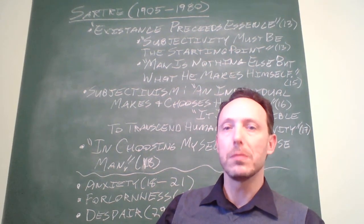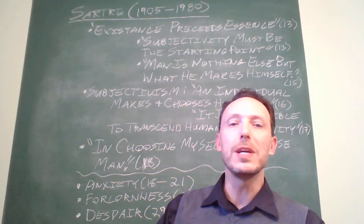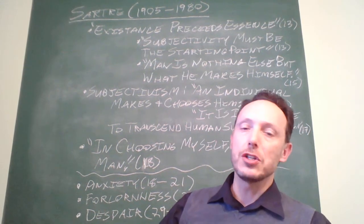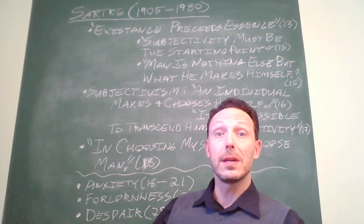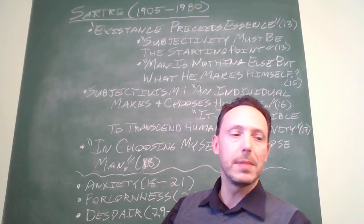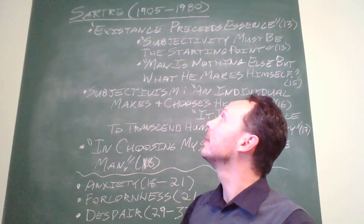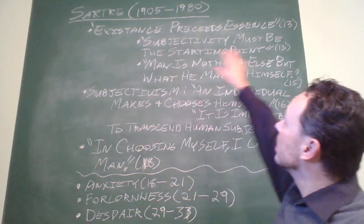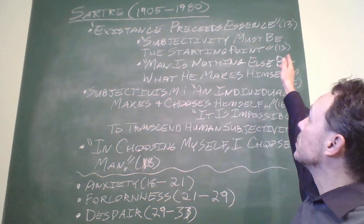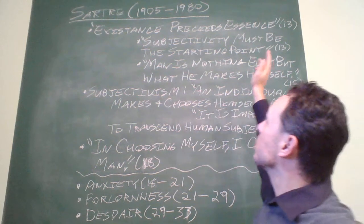Essentially, what Jean-Paul Sartre does is reads between the lines in Nietzsche and other theorists to articulate a position that can be in terms of a slogan summed up in terms of what you find on page 13, existence precedes essence.